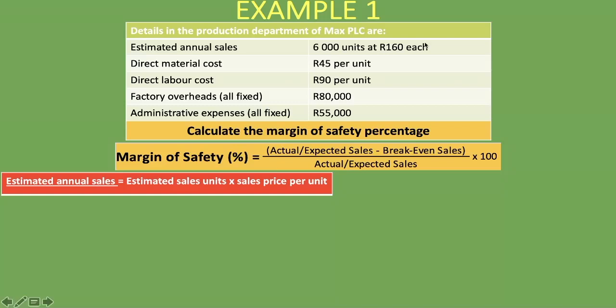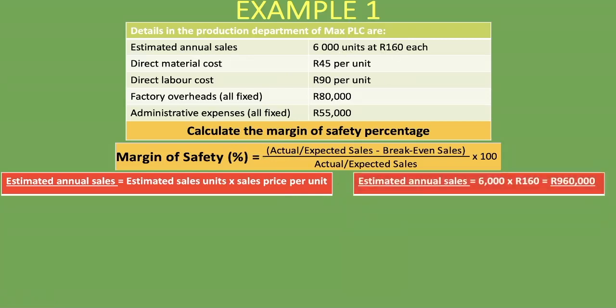Our estimated sales units — which you'll usually be given — is 6,000 units. We multiply that by the sales price per unit of 160 rand. So 6,000 times 160 gives us expected sales of 960,000 rand.